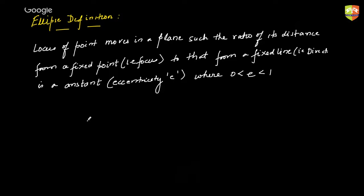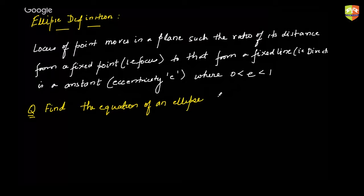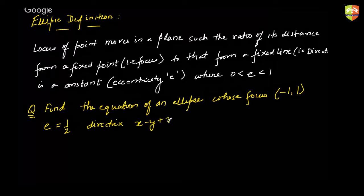On the basis of this definition, let's start with a simple problem. Find the equation of an ellipse whose focus is (−1, 1), eccentricity is 1/2, and the directrix equation is x − y + 3 = 0.